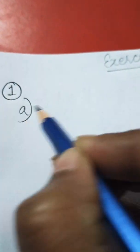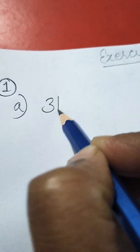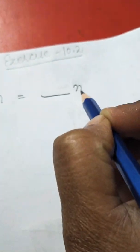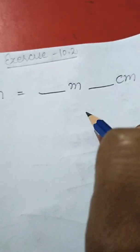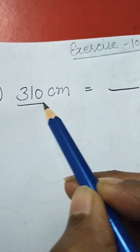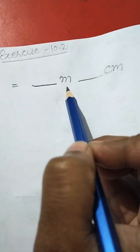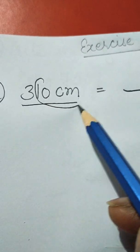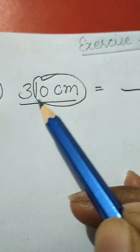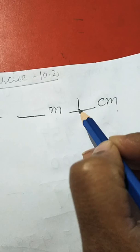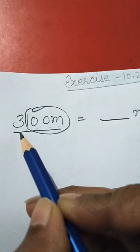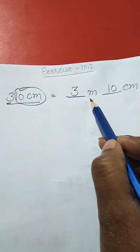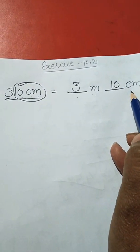Part A: 310 centimeters is equal to dash meters dash centimeters. Since two digits go with centimeter, we write 10 as centimeters and the remaining digit 3 as meters. So the answer is 3 meters 10 centimeters.